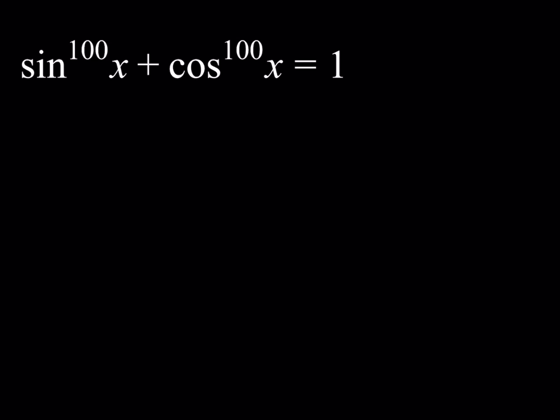We have sine x to the power 100 plus cosine x to the power 100 equals 1, and we're going to be solving for values of x. I don't think you would want to take an expression like sine squared x plus cosine squared x and raise it to the 50th power. That would be crazy. We know that it equals 1, but that would create a lot of problems. So we're not going to go that route.